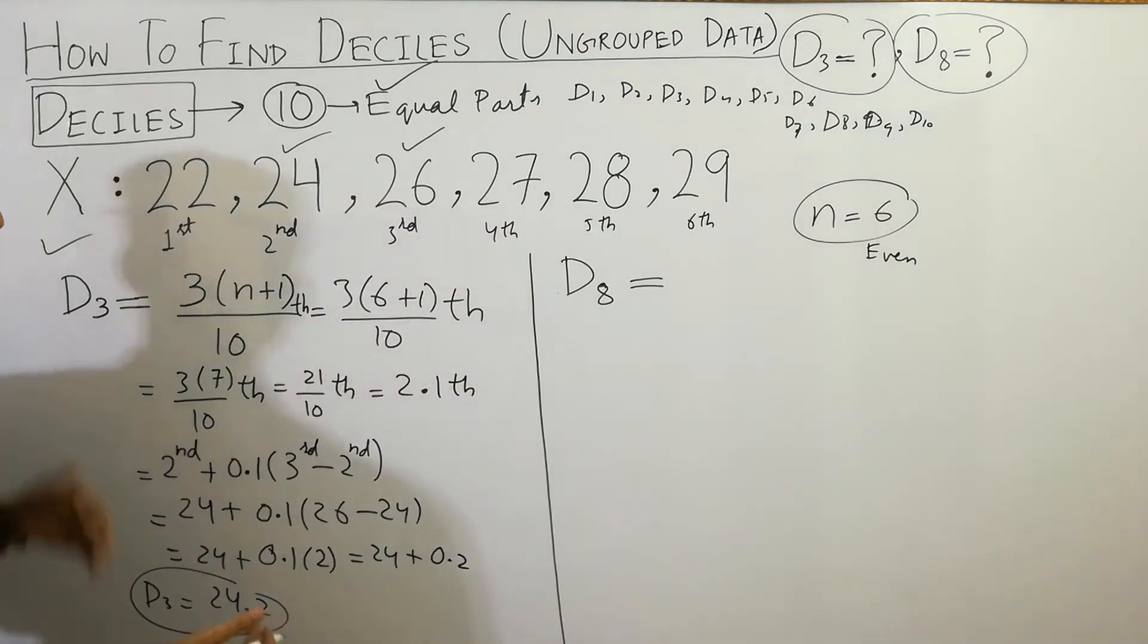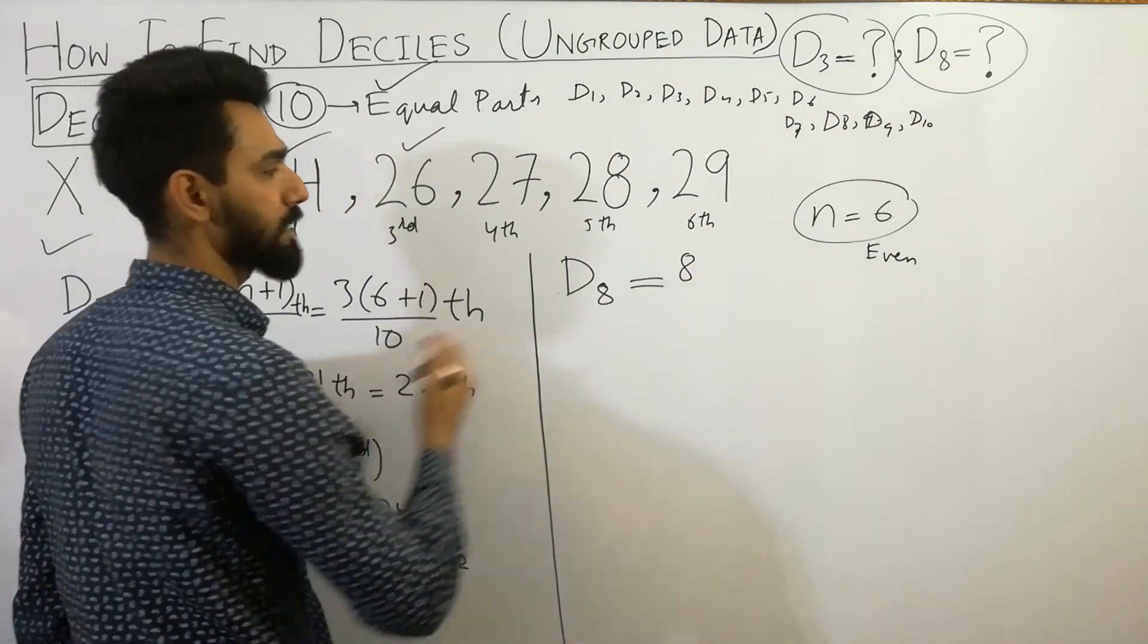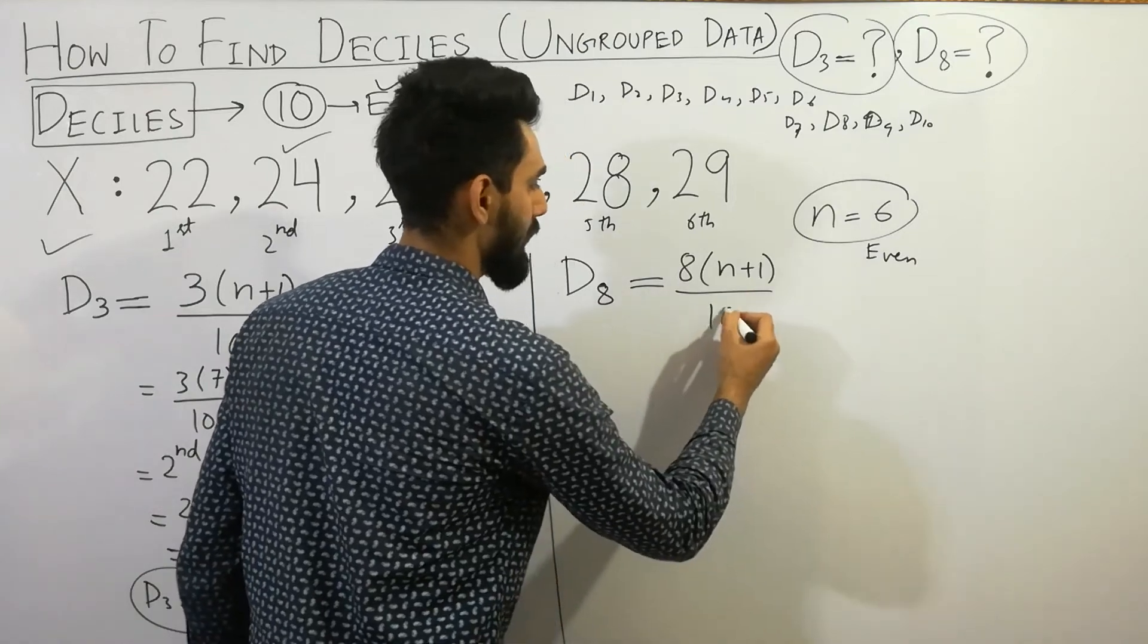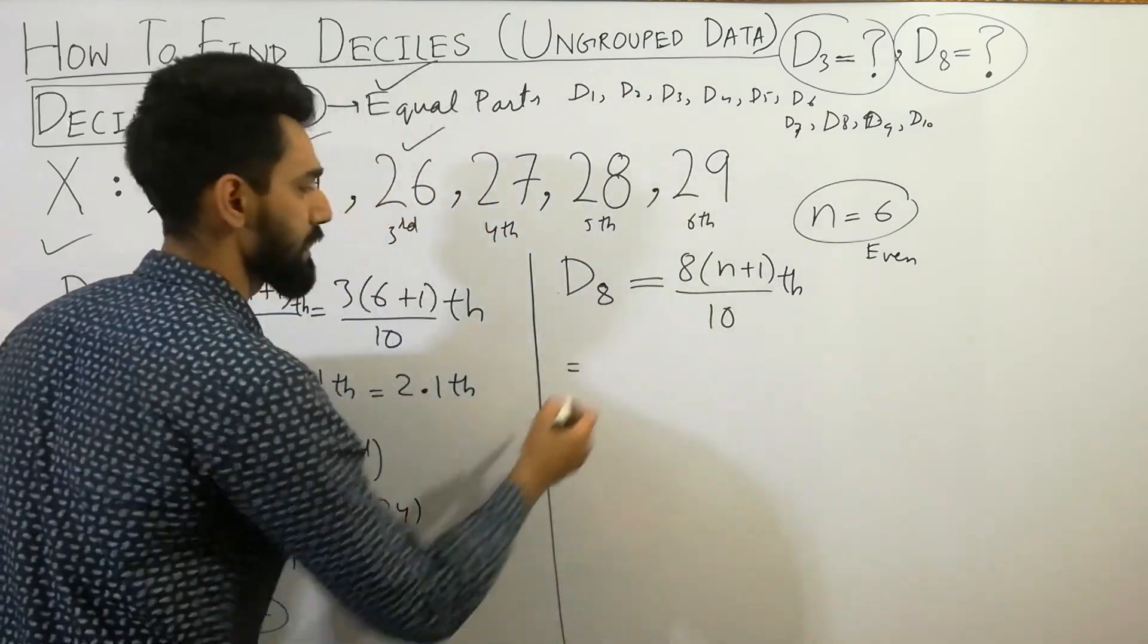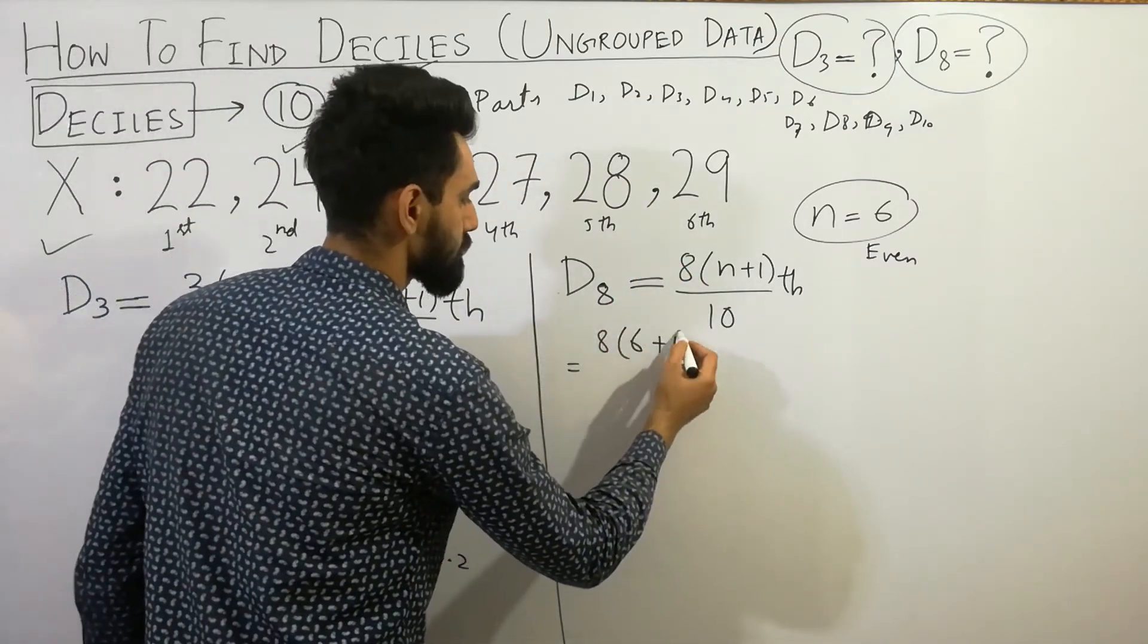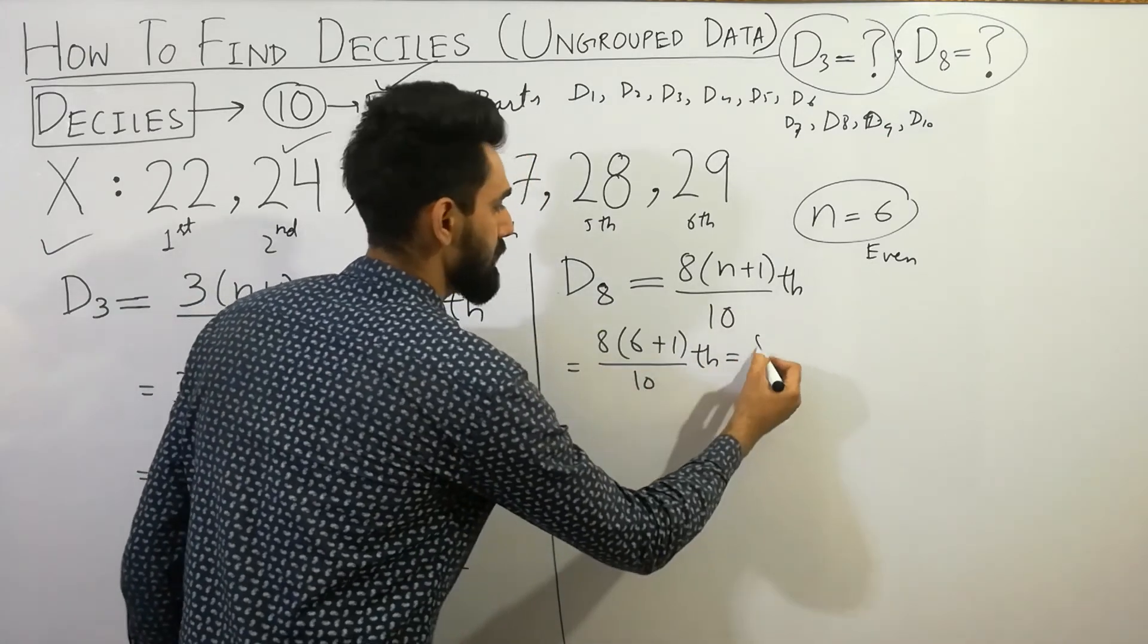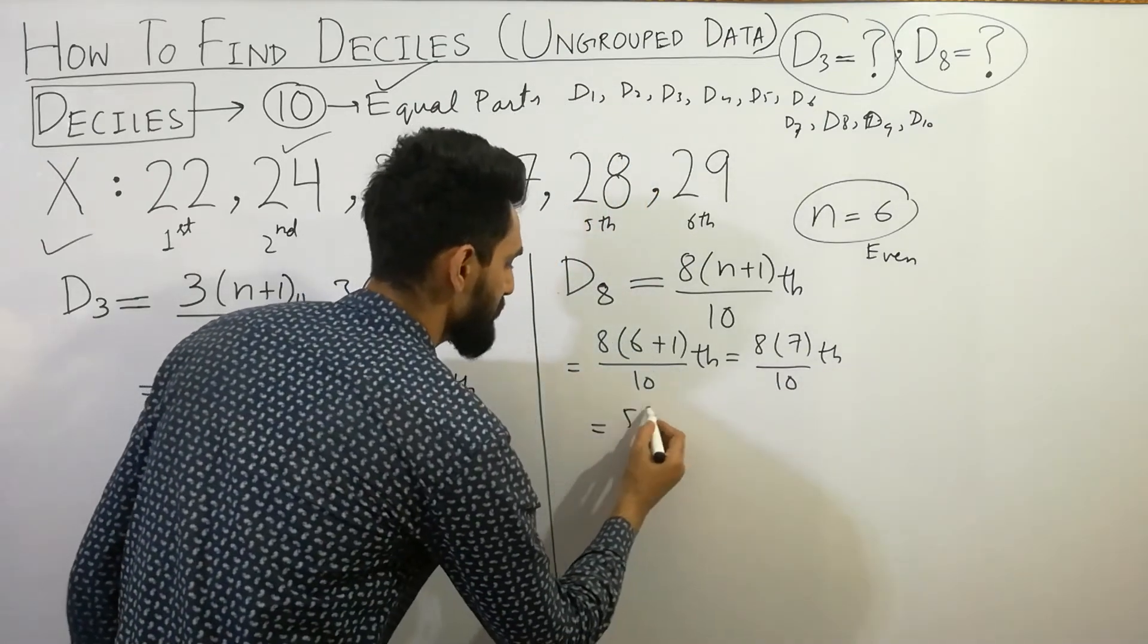Now I'm going to calculate d8. D8, very simple, just like that you can easily do that: 8 bracket n plus 1 over 10 th. Now putting the values here, 8 bracket n is 6, 6 plus 1 divided by 10 th. 8 times 7 over 10 th, 7 times 8 is 56 divided by 10 th.